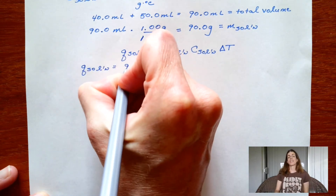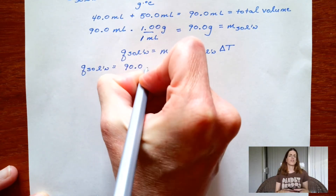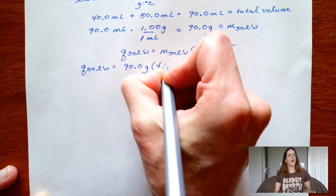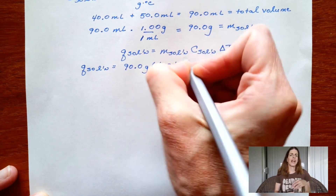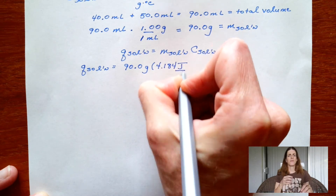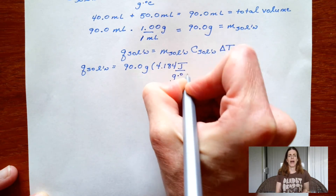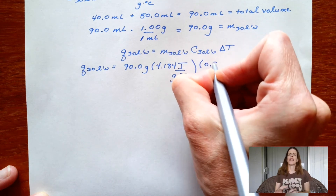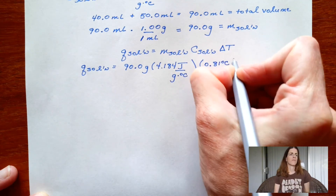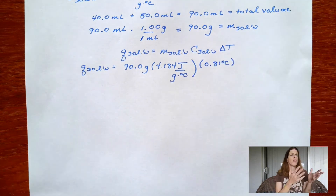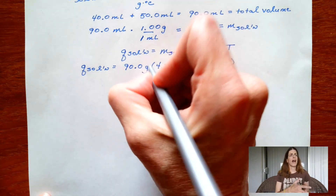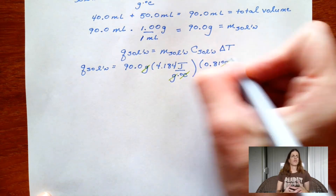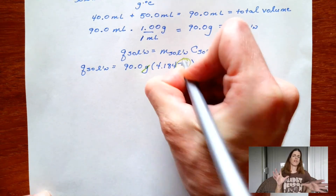Now that we've figured out the mass of the solution, we're ready to solve for Q. I start plugging in: 90 grams times the specific heat capacity given in the prompt, times the Delta T value we solved for earlier. Multiplying it all together and noticing that the units cancel out, we're left with just units of joules — and that's perfect because we're solving for heat energy.